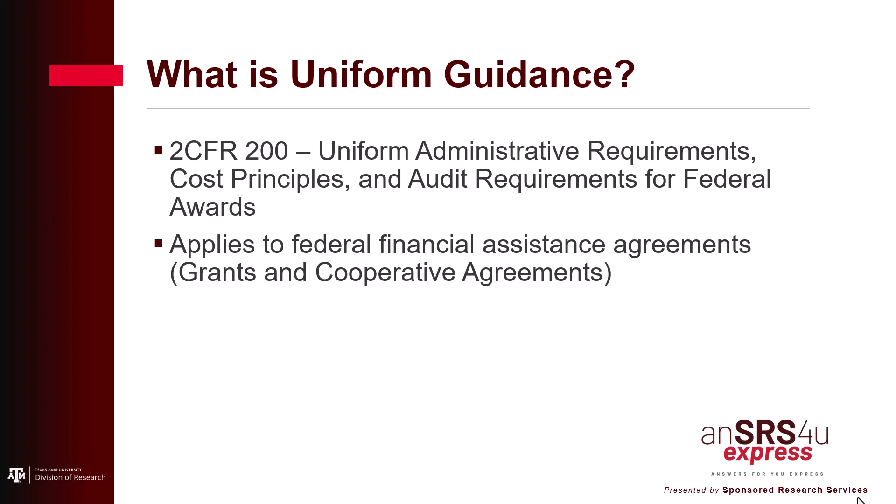Uniform Guidance is located in Title II of the Code of Federal Regulations. The purpose of the guidance is to streamline administrative burdens and to strengthen oversight of federal funds to reduce fraud, waste, and abuse. The requirements established in this part apply to federal agencies that make federal awards to non-federal entities.